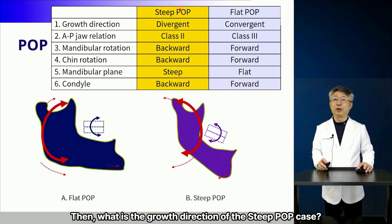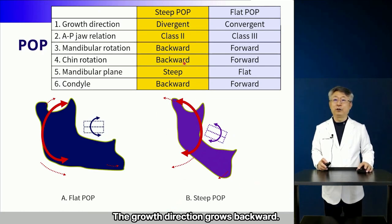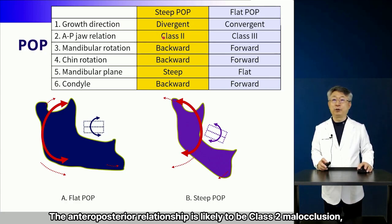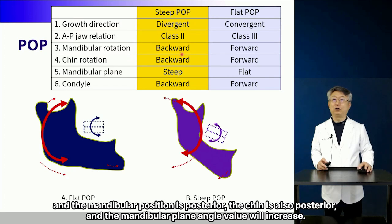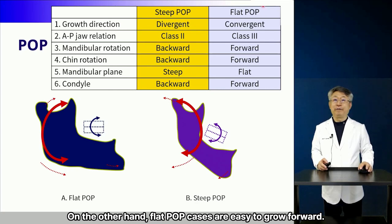What is the growth direction in steep POP cases? The growth direction grows backward. The anterior-posterior relationship is likely to be class 2 malocclusion, the mandibular position is posterior, the chin is also posterior, and the mandibular plane angle value will increase. The condyle will also grow posteriorly. On the other hand, flat POP cases are easy to grow forward.